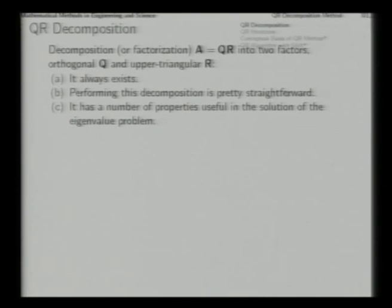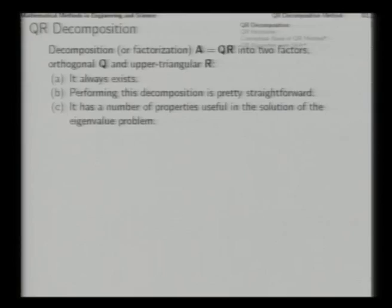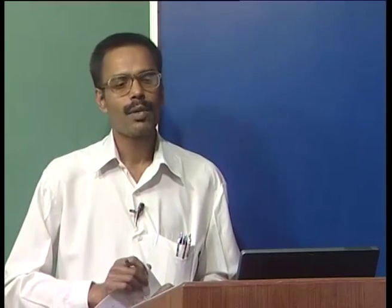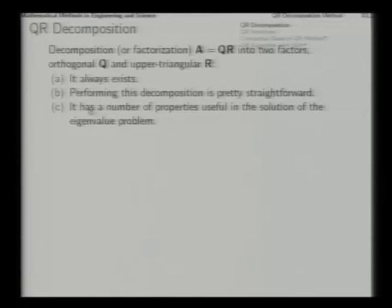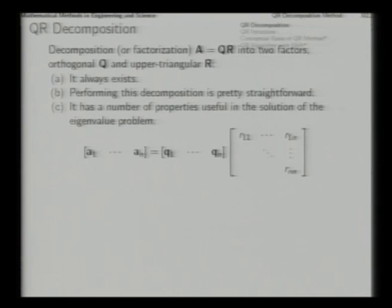The good point about QR decomposition is that it always exists — whatever matrix you give, one can decompose it into Q and R factors. For every square matrix you have a QR decomposition, so it will always exist. Performing this decomposition is also pretty straightforward. If you have come through the exercises in the previous chapters of the textbook, you would have already decomposed one matrix into Q and R factors.